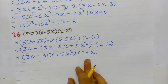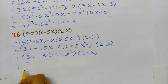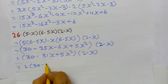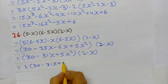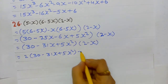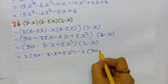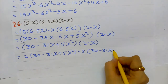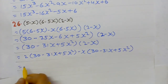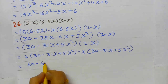Now we break the 2nd bracket and multiply using the distributive property: 2 × (30 - 31x + 5x²), then -x × (30 - 31x + 5x²). Multiplying: 2 × 30 = 60; 2 × (-31x) = -62x.